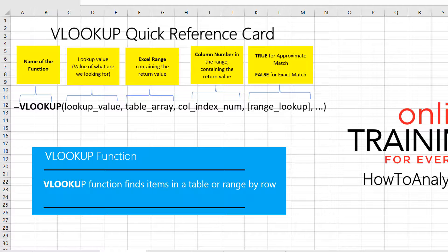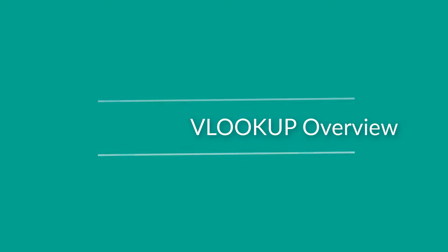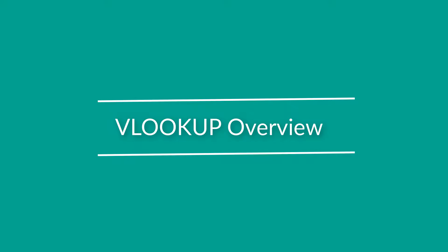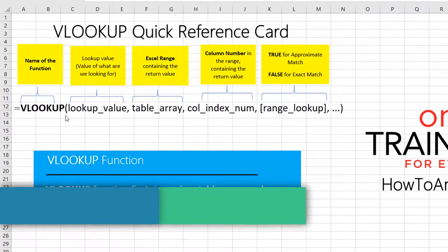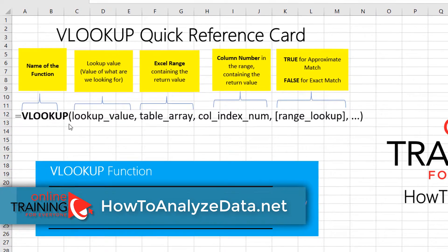In this tutorial, I'm going to show you how you can look up a number using the VLOOKUP formula. VLOOKUP function helps you find items in a table or range by row. It has four parameters — let's look at those parameters in more detail.